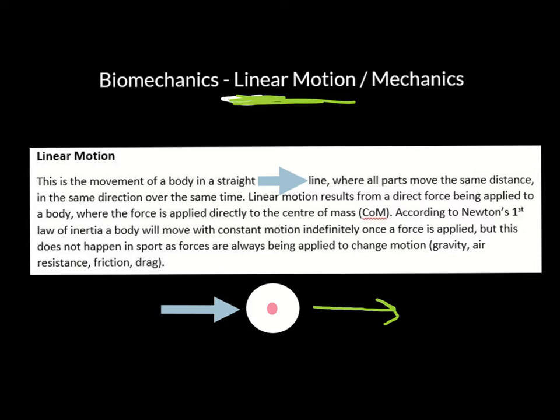Now thinking back to Newton's laws of motion, this is very much linked to Newton's first law of motion, the law of inertia: a body will move with constant motion indefinitely once a force is applied. But we know that doesn't happen on Earth because there are always forces acting — gravity, air resistance, friction, drag. But for the purposes of this, if you apply a force straight through the centre of mass of an object, that object will travel in a straight line — we call this linear motion.